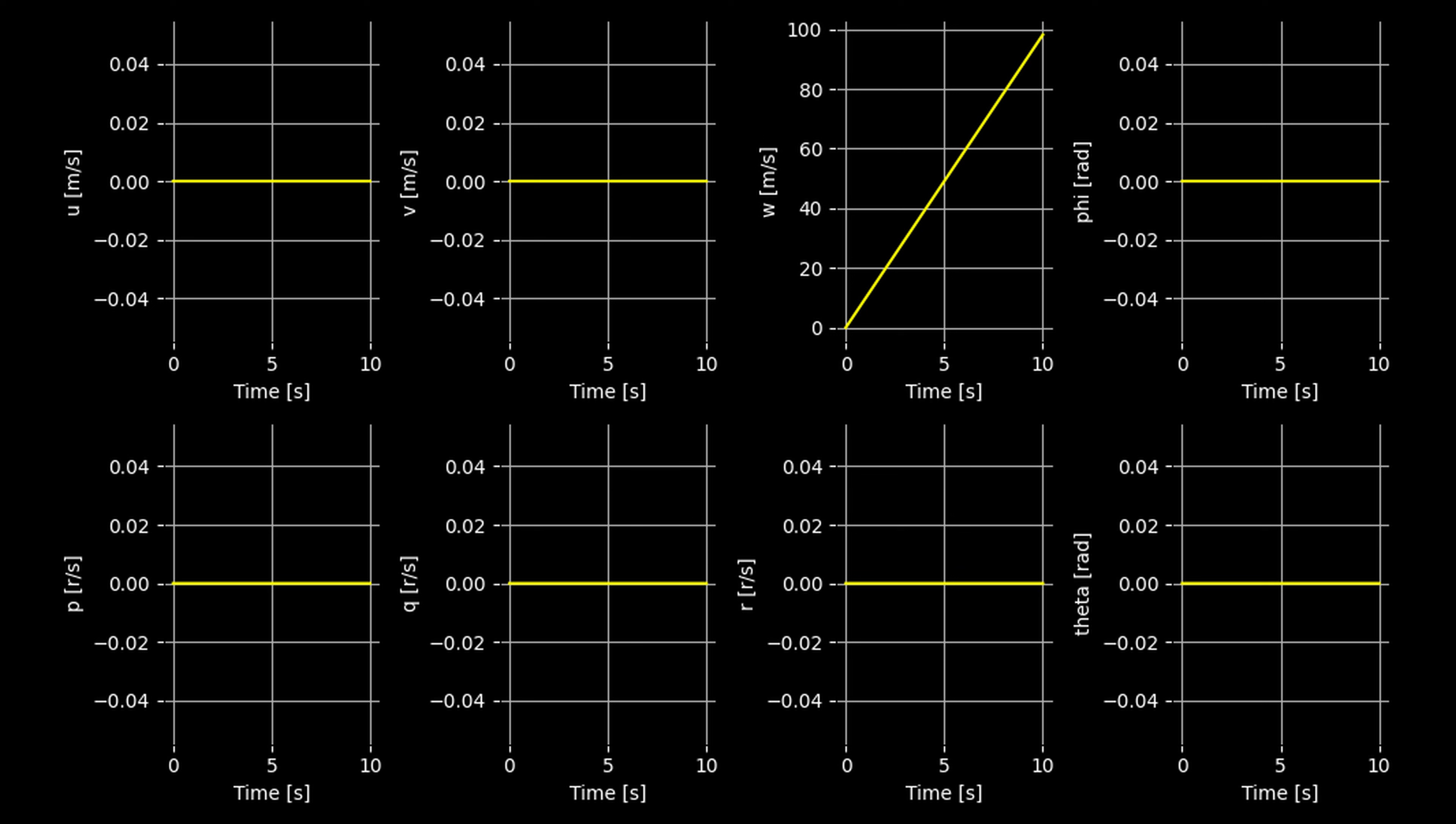Further, there's no moment acting on the sphere. So the angular rates p, q, and r are all zero. This means that the Euler angles are also all zero. Throughout the simulation, the sphere z-axis remains normal to the horizon and the sphere simply falls under gravity.